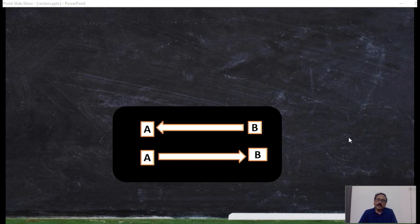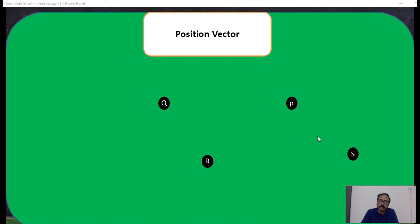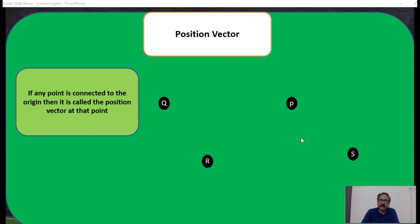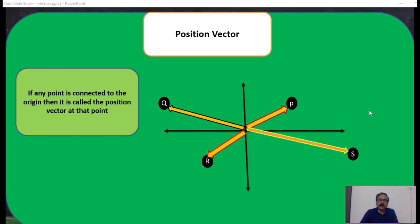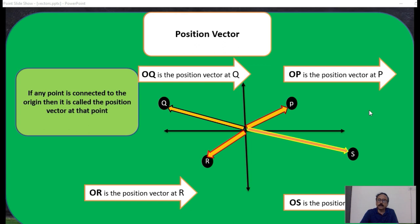It is very important to define the negative vector. If the vector from A to B is in the positive direction, then the vector from B to A is in the negative direction — so BA-bar is the negative of AB-bar. Position vectors are also very important: if we take a reference origin and join it to any point Q, then OQ is called the position vector of Q. Similarly, OP is the position vector of P, OR is the position vector of R, and OS is the position vector of S.